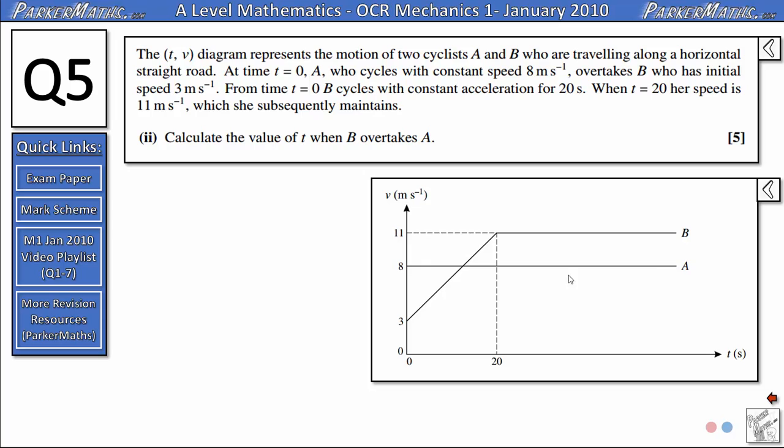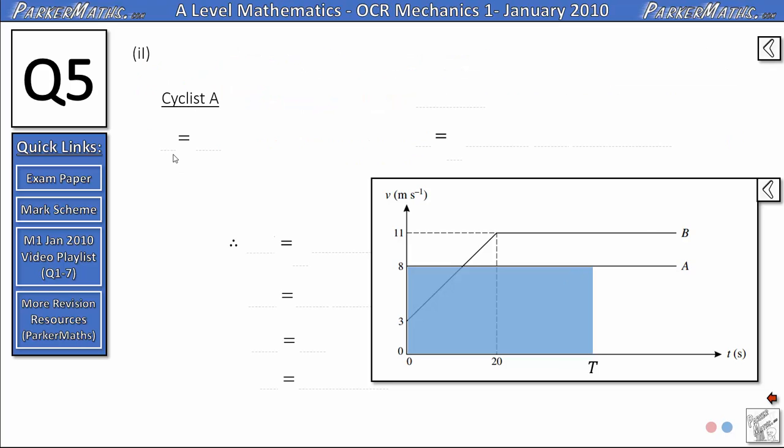Starting with cyclist A, the displacement given by the area underneath the line is going to be the area of a rectangle. If we imagine that the cyclist travels the distance we want in a time capital T, to find that displacement we would do 8 multiplied by T. So for cyclist A the displacement is 8T.